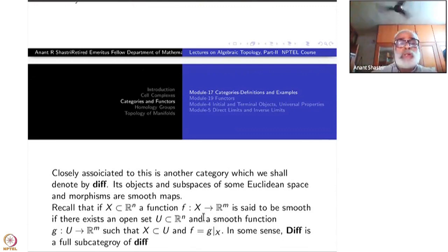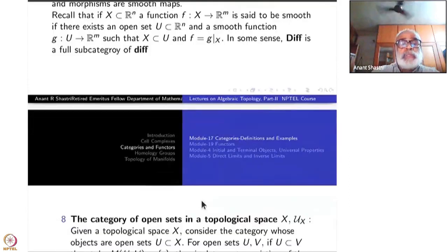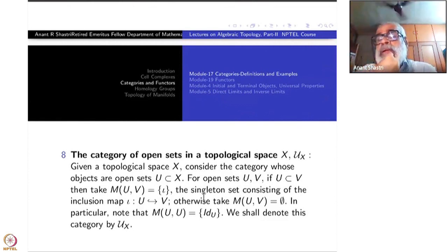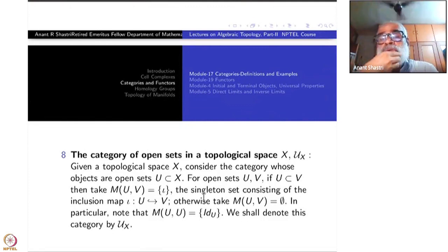This is one of the important categories. The category of open sets in a single topological space is a wonderful category — again not going to be used in this course — but it will be useful when you study cohomology theories and sheaf theory.